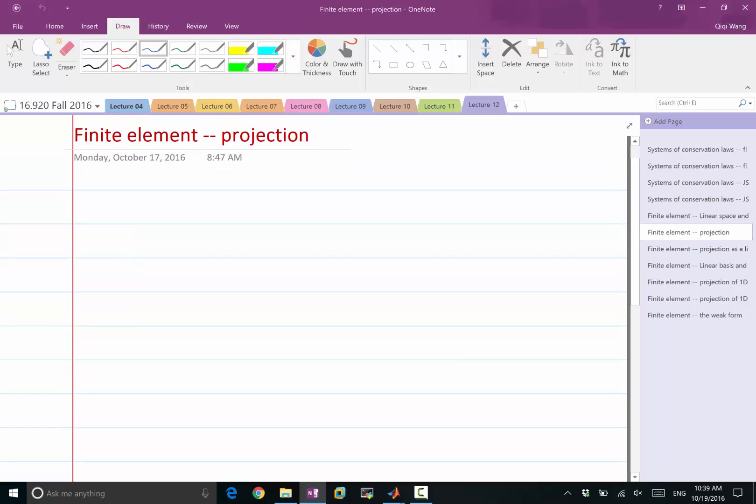But if I define the distance in a particularly good way, the optimization problem can turn out to be very easy to solve. For example, if I define the distance between two functions f and x to be the following: the square root of the integral over domain, let's say a and b, f minus x square.